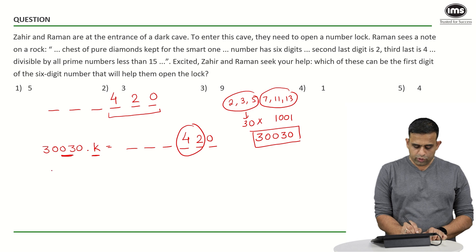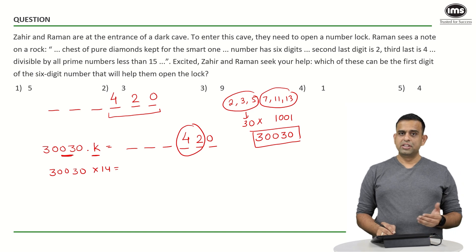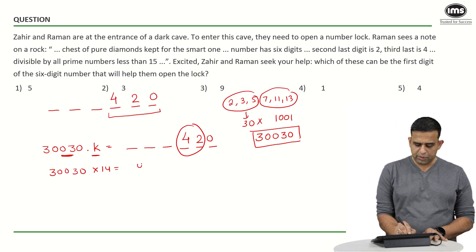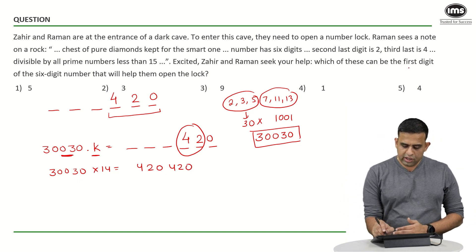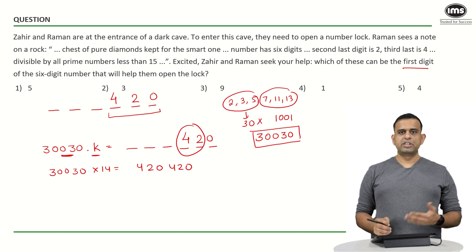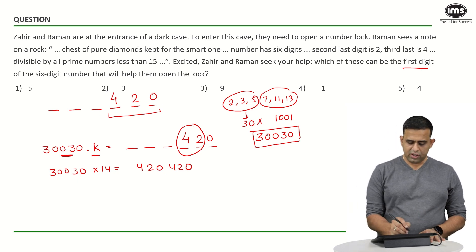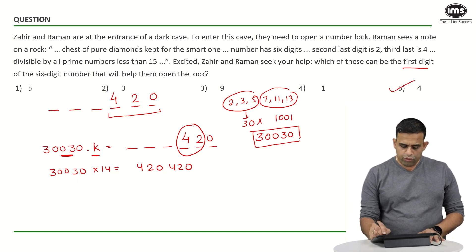So if I look at the value of k as 14 and if I do 30030 into 14, one will find out that this particular code happens to be 420420 and what they want is the first digit which can help him open the lock and that is 4.